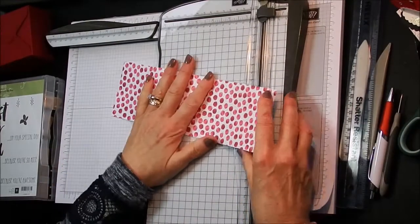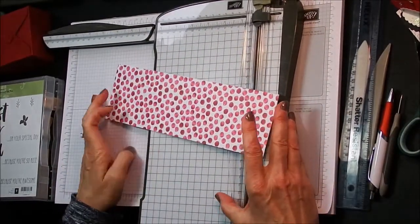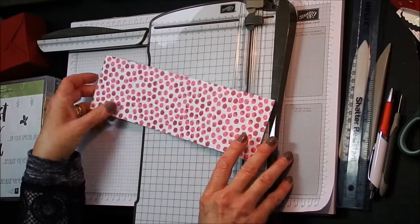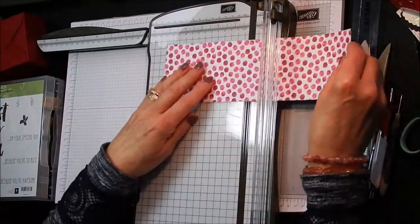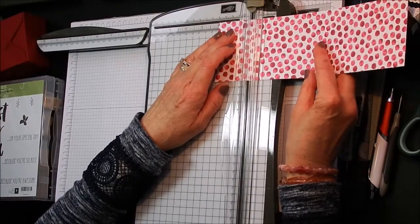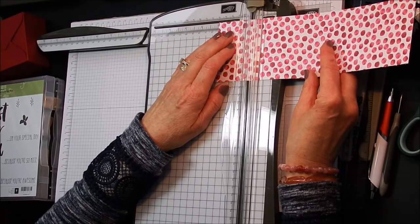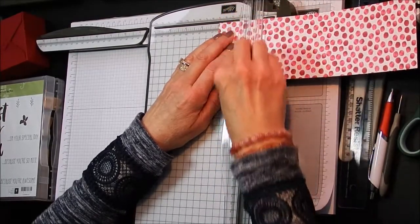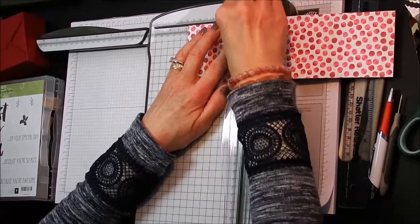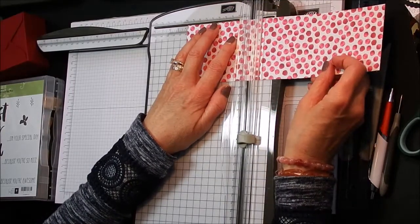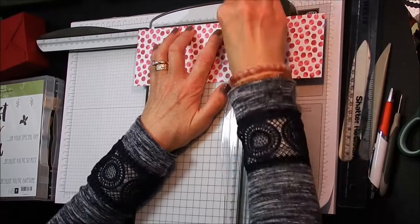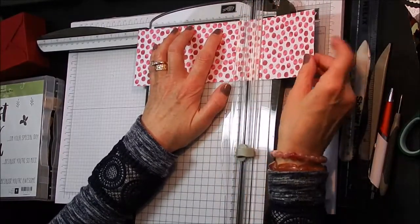So, my designer series paper measures 11 inches by three and a quarter, which is 28 by 8.2 centimetres. All measurements will be on my blog. And we are scoring it at 2 inches. Scoring it at 2 inches, 3 and 7 eighths inches, 7 and 1 eighth inches, and 9 inches.